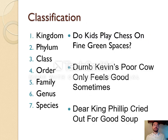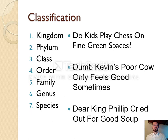You are required to know this order, and there are mnemonic devices to help. Starting from domain: domain, kingdom, phylum, class, order, family, genus, species. For example: 'Do kids play chess on fine green spaces?' or 'Dumb Kevin's poor cow only feels good sometimes,' or 'Dear King Philip cried out for good soup.' Memorizing one of these will help you remember the order of letters.